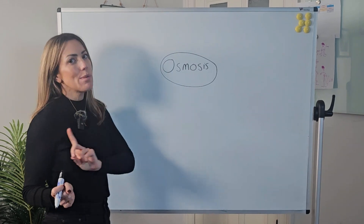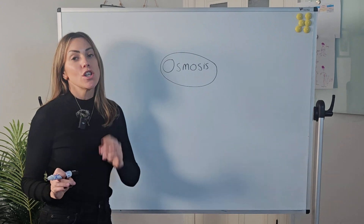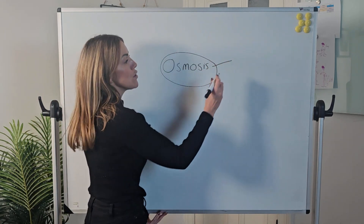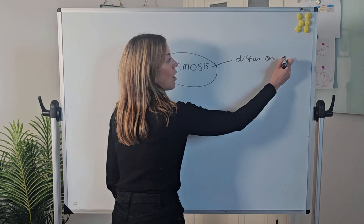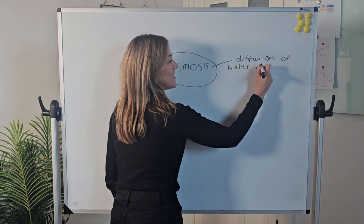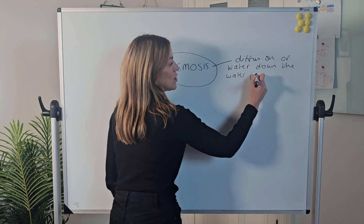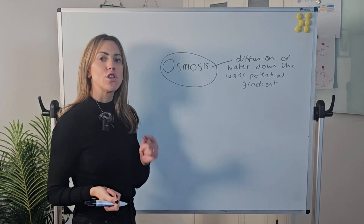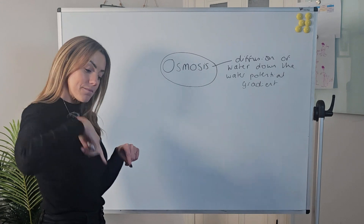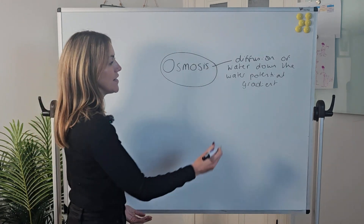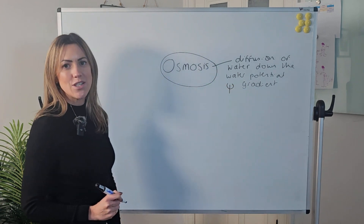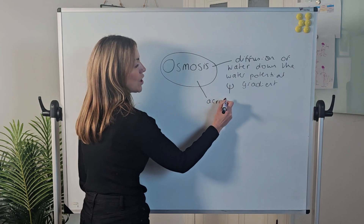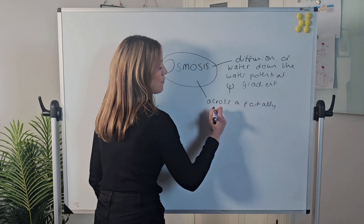In this video we're going to explain osmosis in a little bit more detail than we did over on TikTok, so hopefully you all know your definition of osmosis by now. Osmosis is the diffusion of water down the water potential gradient, or alternatively, the diffusion of water from a higher water potential to a lower water potential. It does occur across a partially permeable membrane.